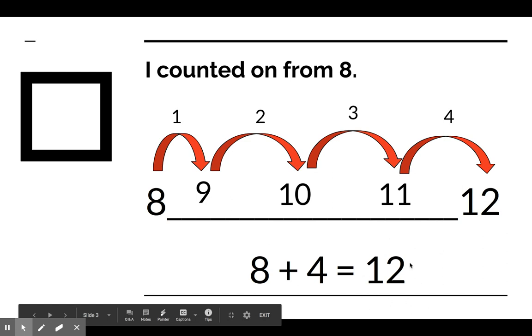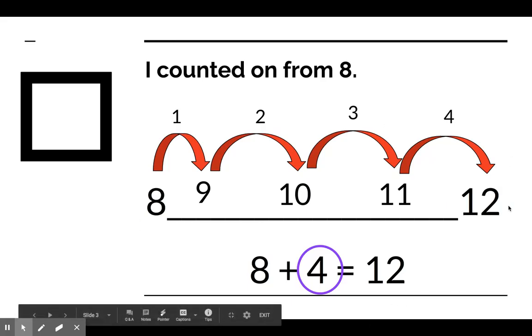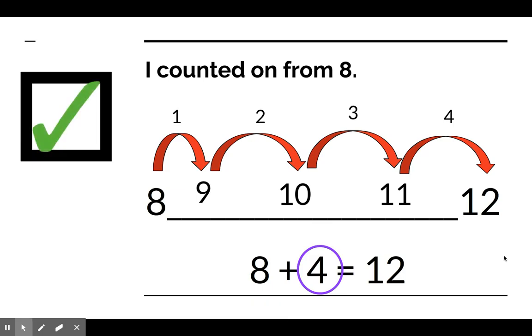Well, I know 12 was how many bouncy balls Jacob had, and 8 is how many he gave away. So, 4 must be the total number of bouncy balls that Jacob has left. I counted on from 8 to 12. This is a strategy you may have used. If you did, check. That's a great strategy. Let's look at another one.